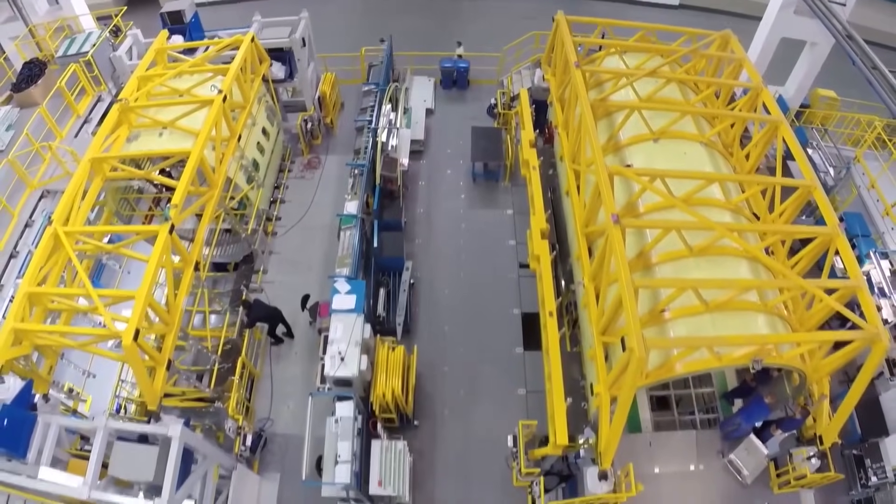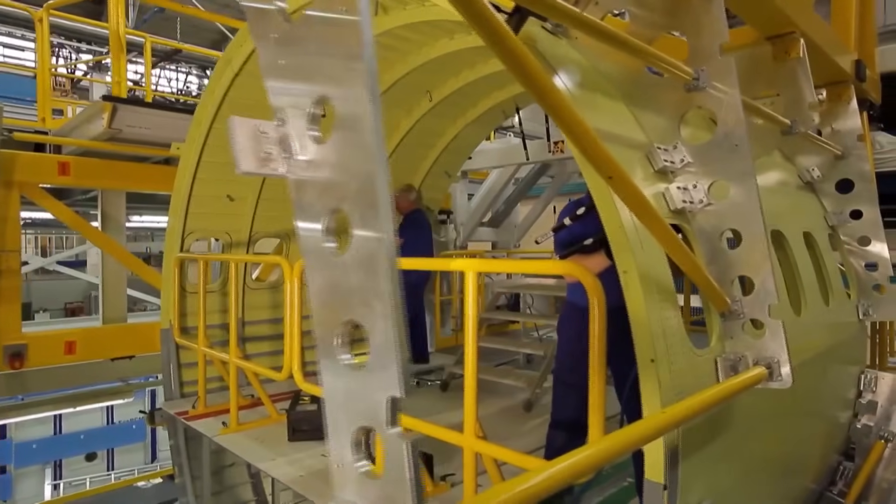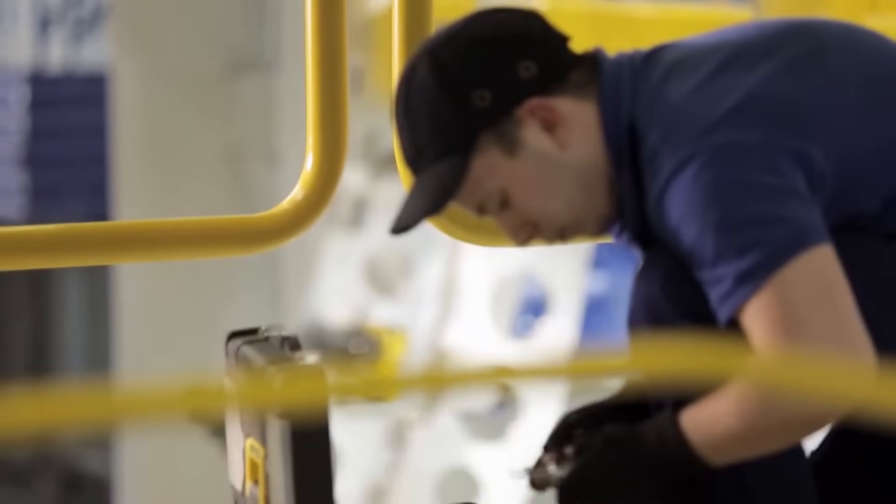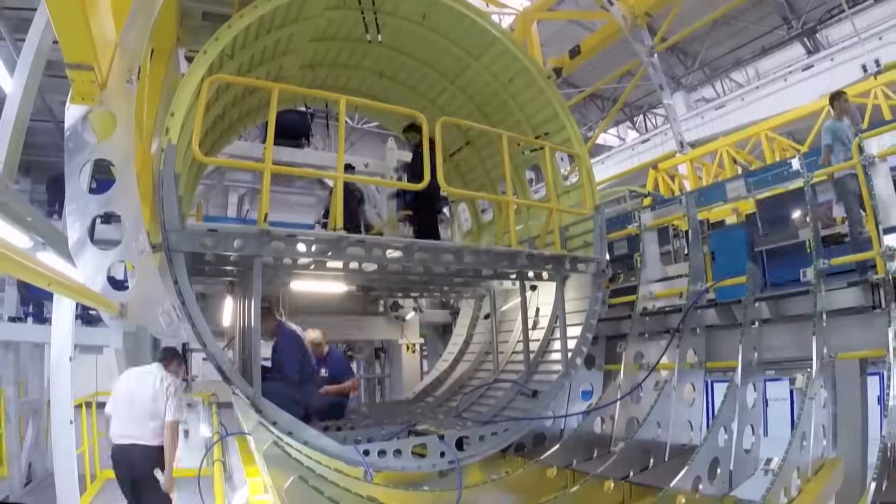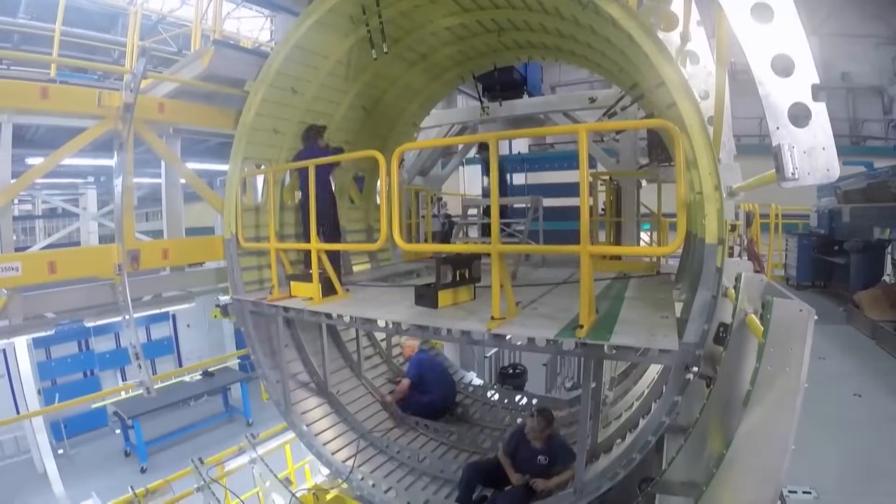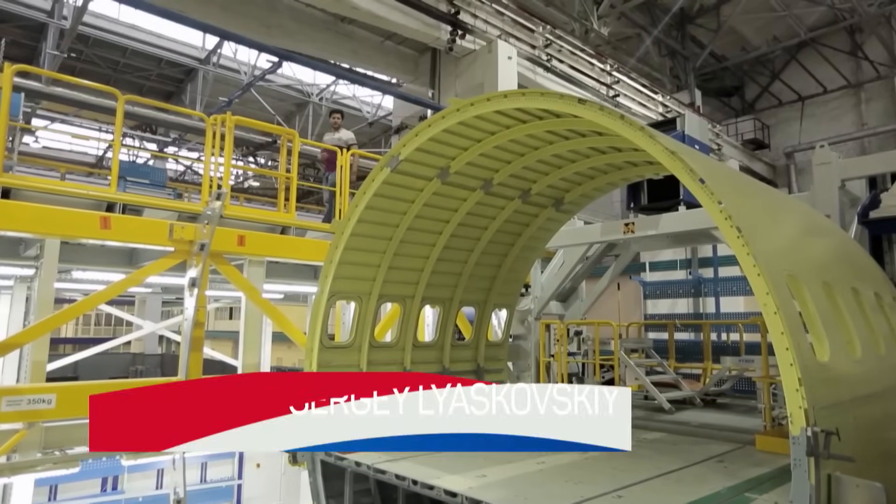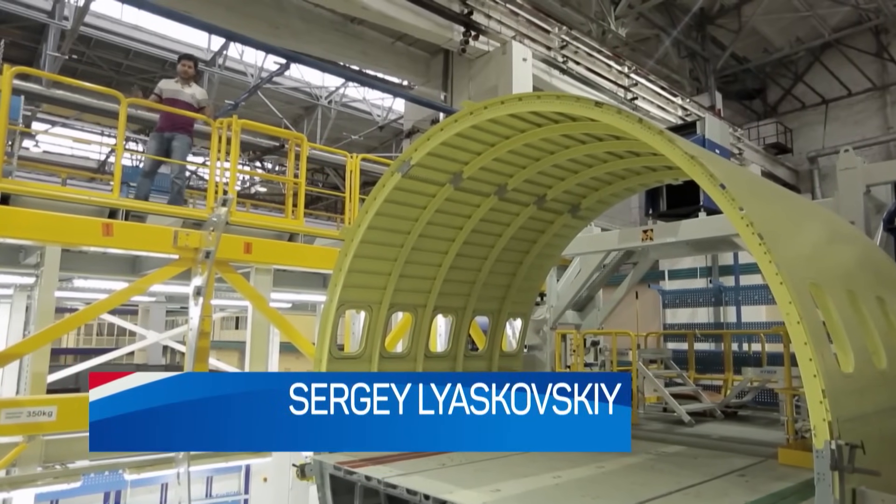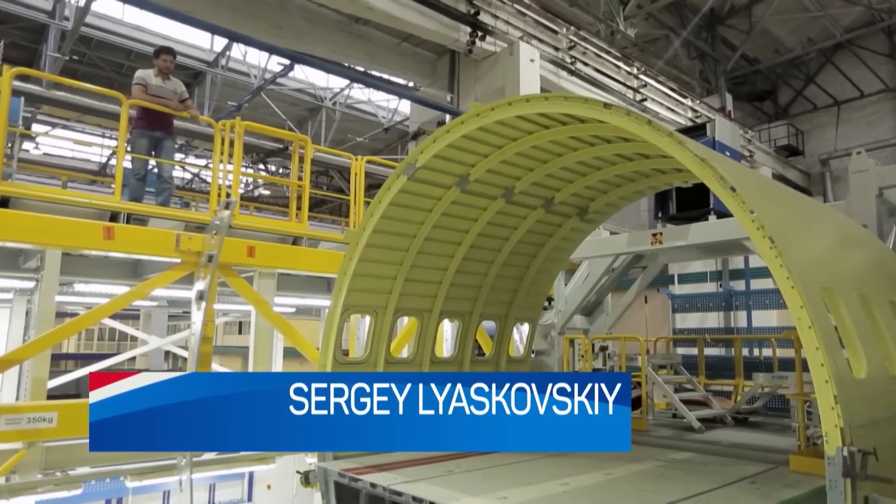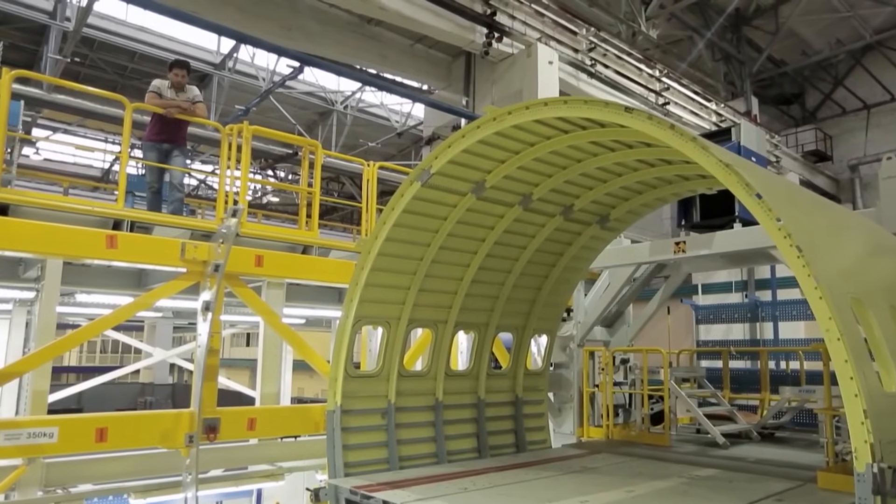One more section is being assembled in parallel to the central one. It is called F4. It is located immediately behind the wing in the plane. The part is special, so it is not installed on each plane. This section is optional. If it is present, we get an MC-21-300, a longer version. If it is not present, then it's a 21-200. The first plane version will be specifically elongated. Now this section is being prepared for mounting.